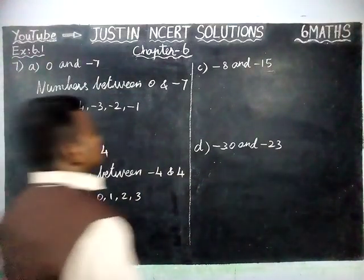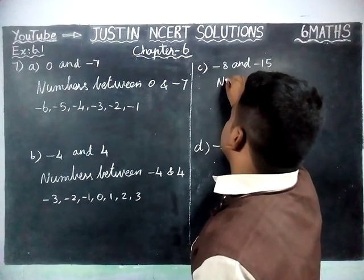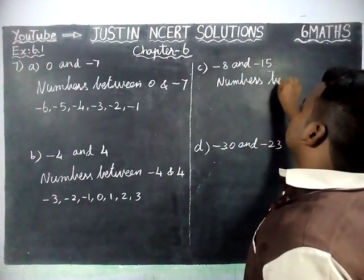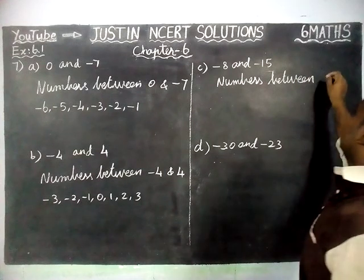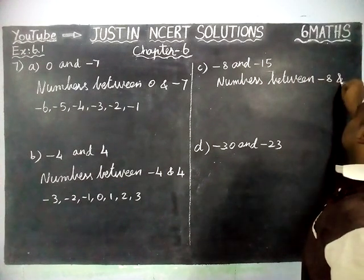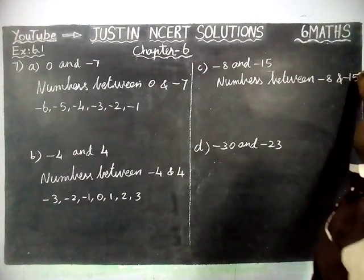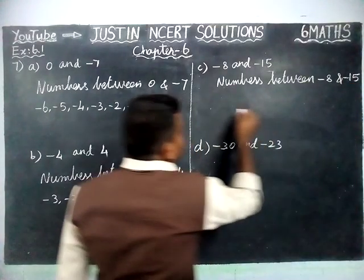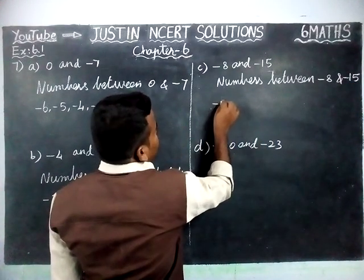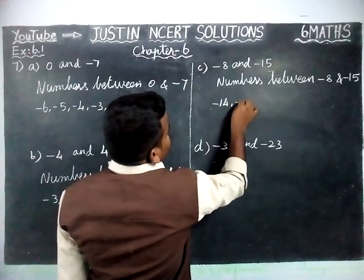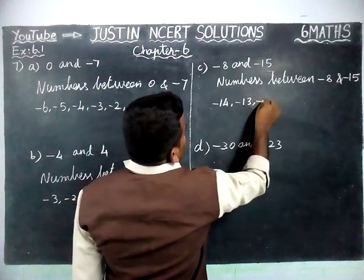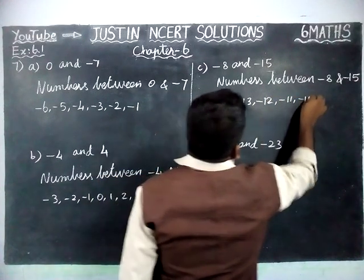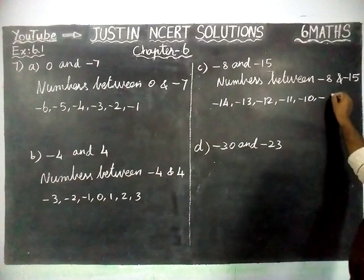Next up, part C. Numbers between minus 8 and minus 15. From the smallest number to largest number. Here, smallest number is minus 15. So, next number: minus 14, minus 13, minus 12, minus 11, minus 10, minus 9.